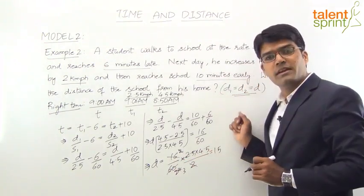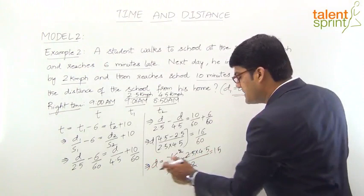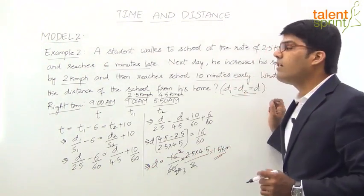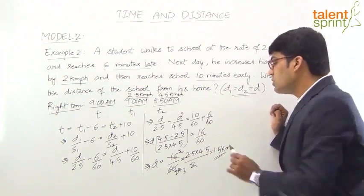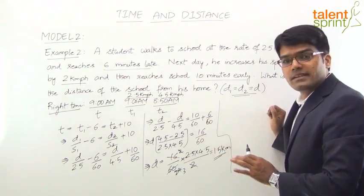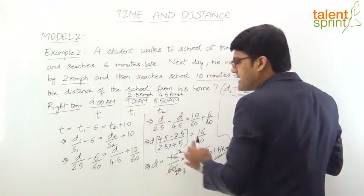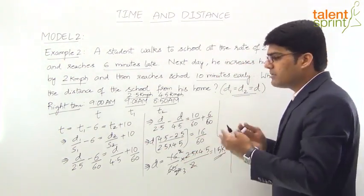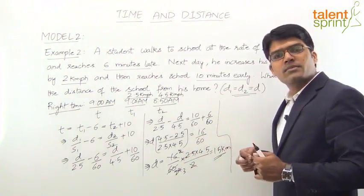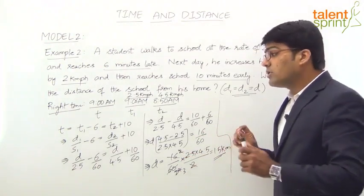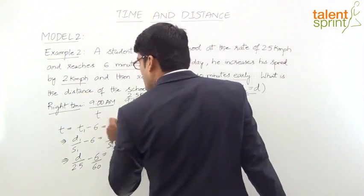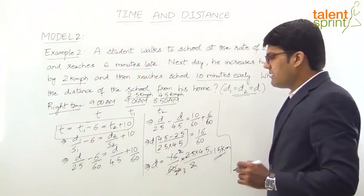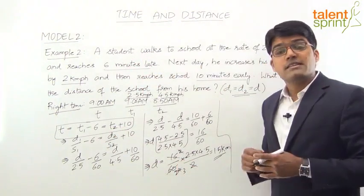Solving further: D equals (16/60) × (2.5 × 4.5) / (4.5 minus 2.5), which gives D equals 1.5 km. So the distance of the school from home is 1.5 km. That is the traditional method to solve this problem.